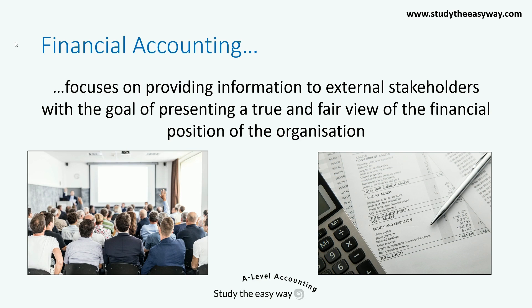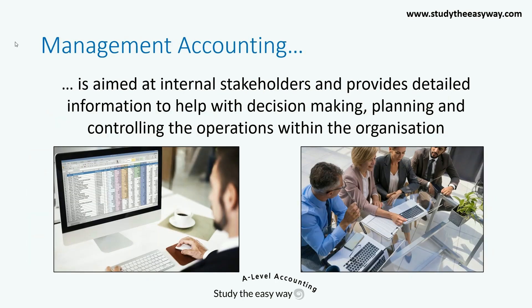Financial accounting is historical — in other words, it's a record of transactions that have already happened, and it presents a summary of how well the business is doing from a financial point of view. Management accounting is aimed at internal stakeholders and provides detailed information to help with decision-making.